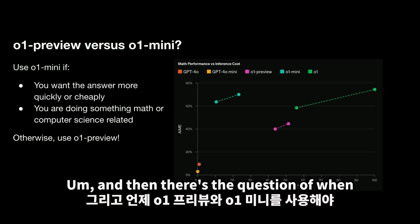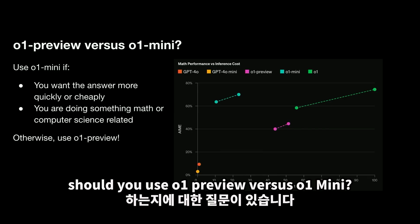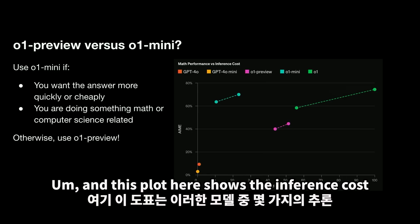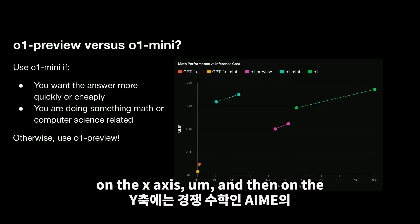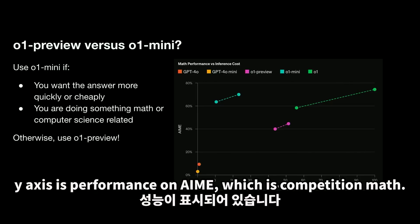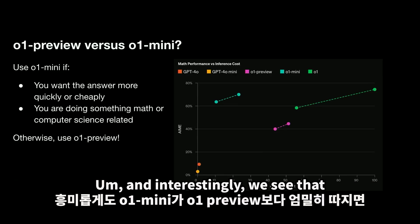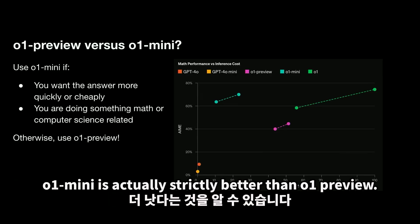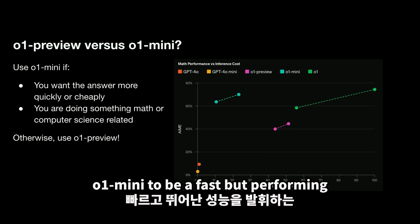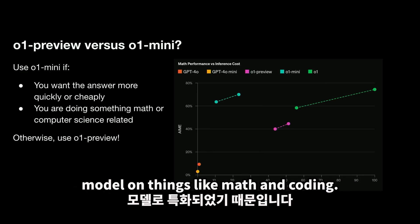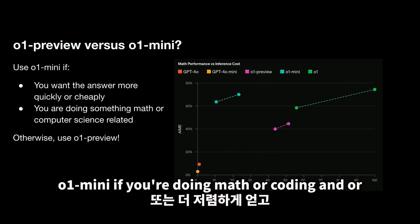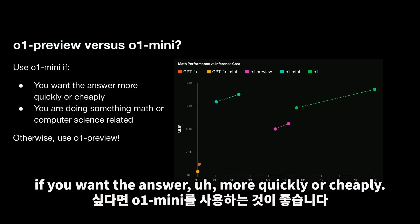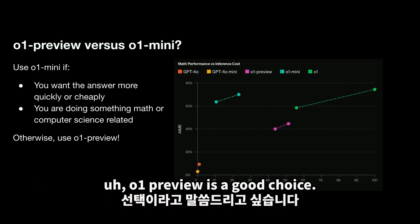There's also the question of when to use O1 preview versus O1 mini. This plot shows inference cost versus performance — inference cost on the x-axis, and performance on IMO (competition math) on the y-axis. Interestingly, O1 mini is actually strictly better than O1 preview, because we really specialized O1 mini to be a fast but performant model on math and coding. You should use O1 mini if you're doing math or coding, or if you want the answer more quickly or cheaply. In other cases, O1 preview is a good choice.